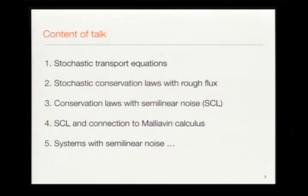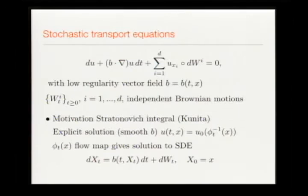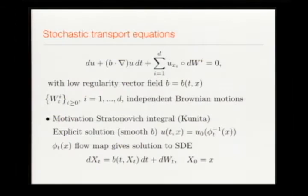The transport equation is driven by a velocity field b, looking for a solution u. You can think of b as a slowly varying noise function, but to capture turbulence you add a fast oscillating component driven by a Wiener process. This slowly varying velocity field plus a fast oscillating component gives what is called transport noise — this is one way of adding noise to your PDE. The product here is a Stratonovich product.